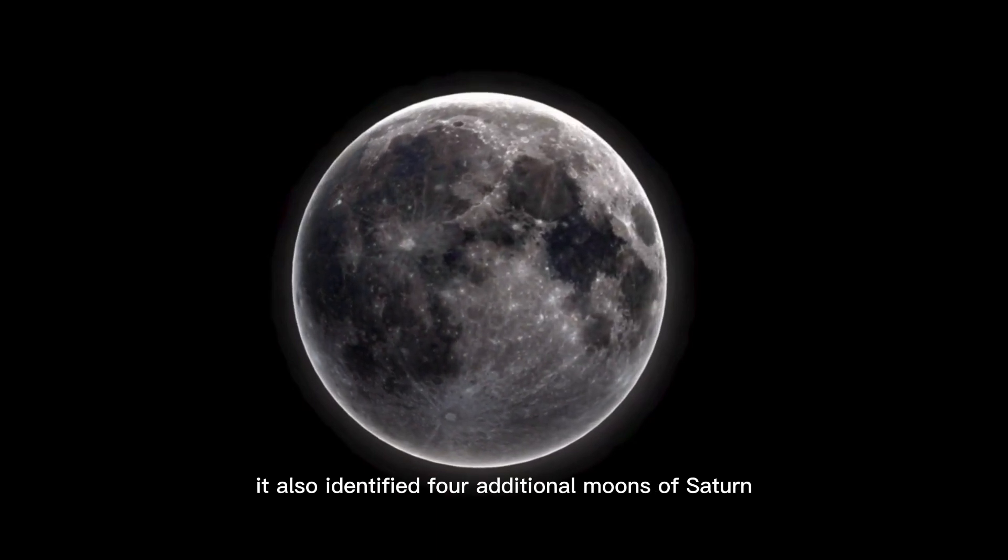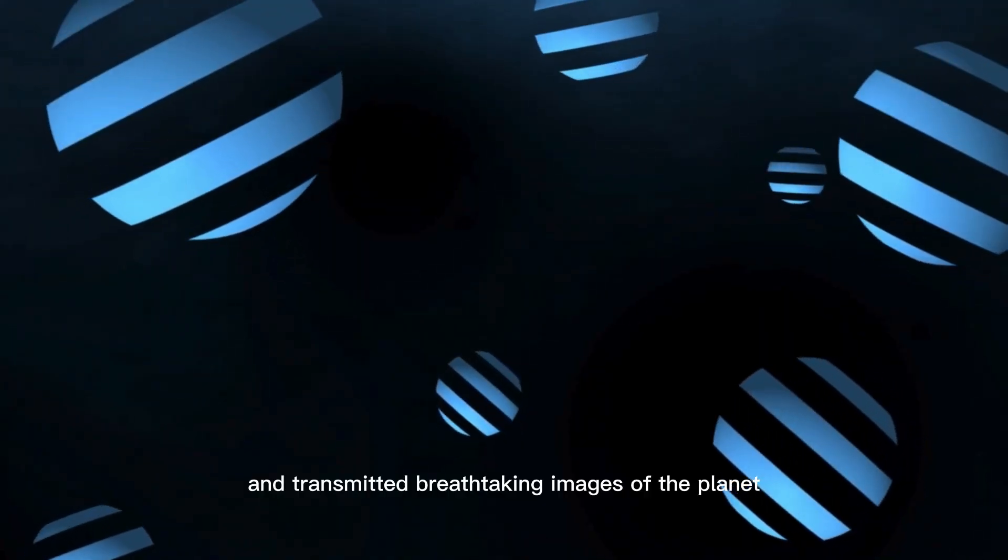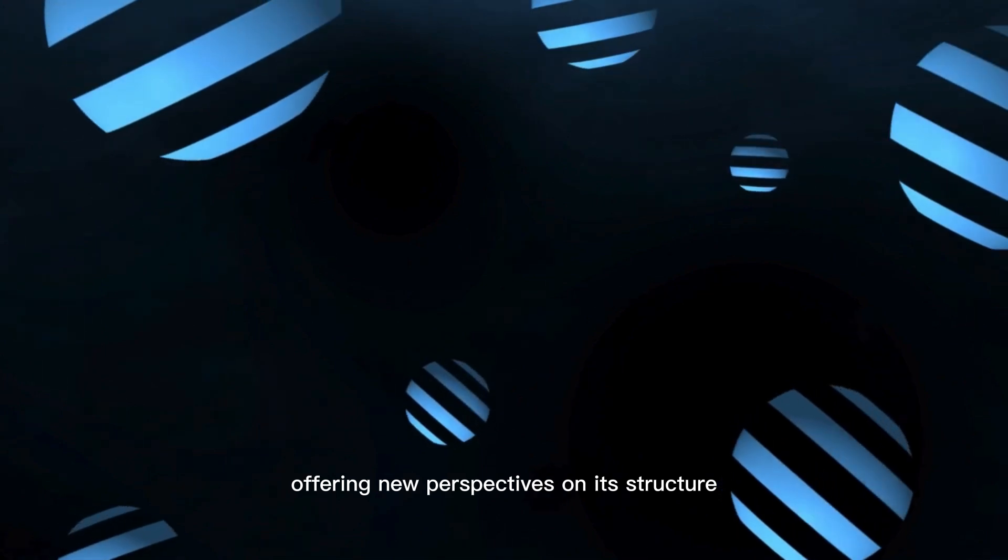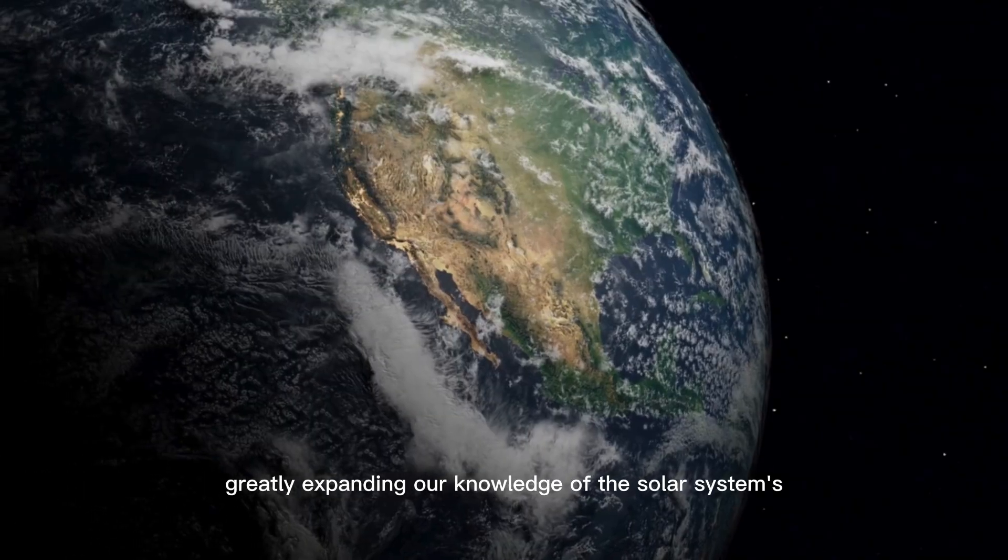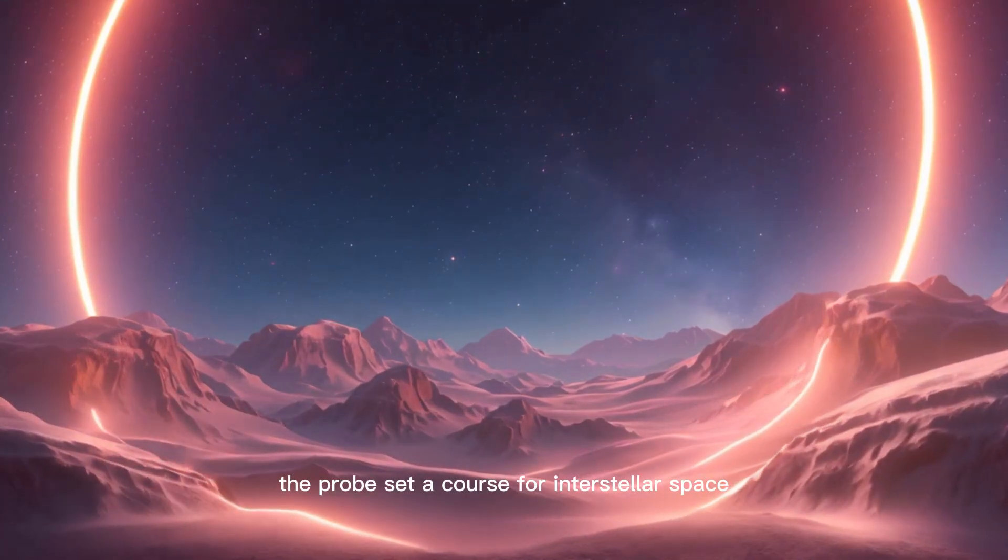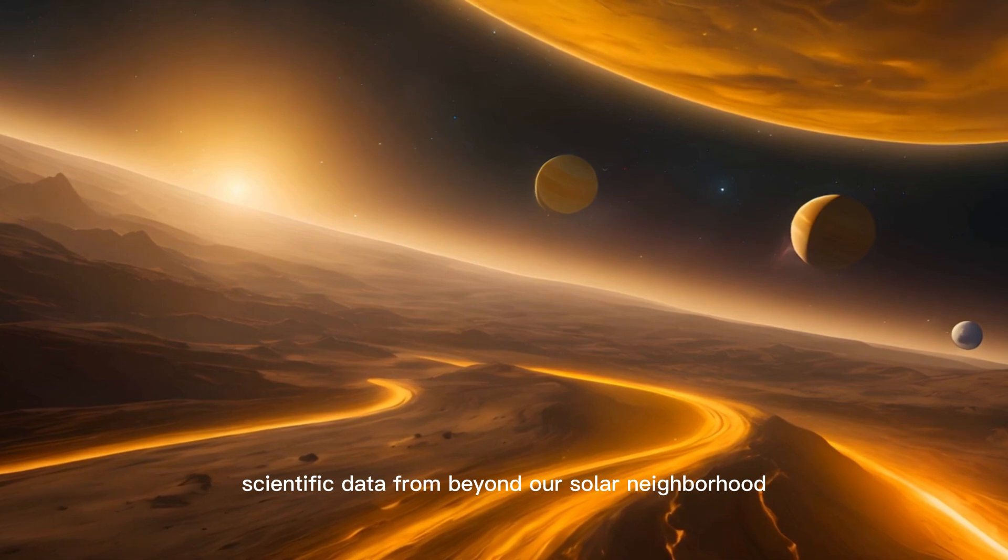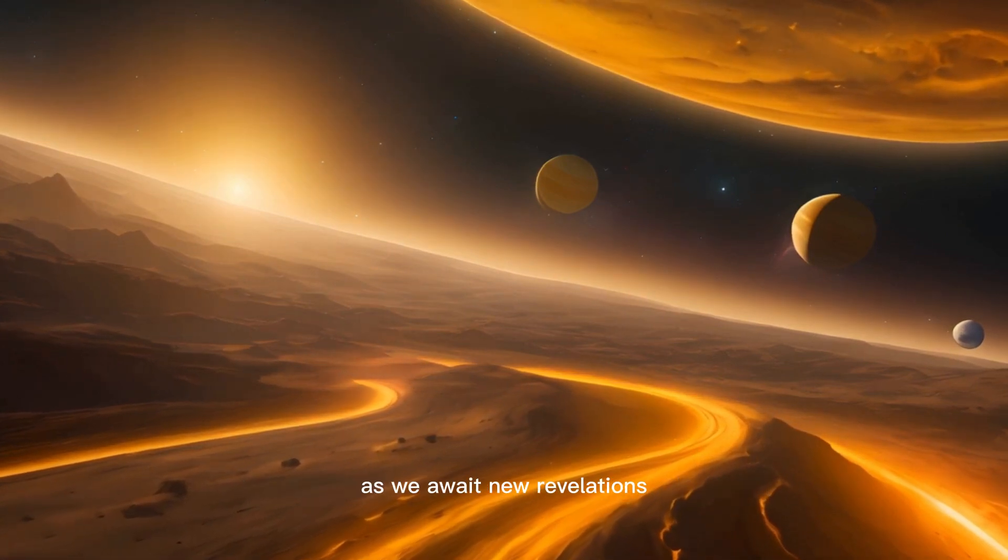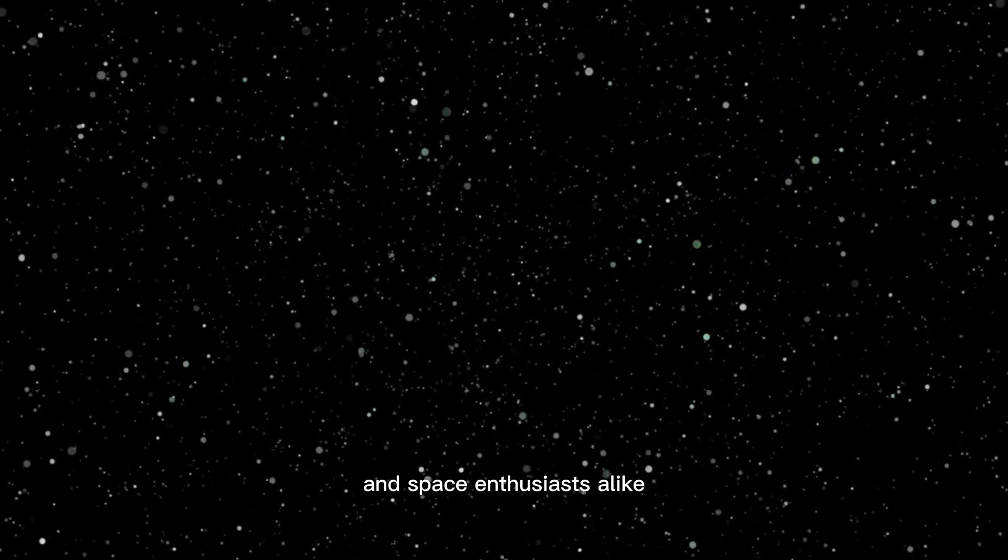It also identified four additional moons of Saturn: Mimas, Enceladus, Tethys, and Rhea, and transmitted breathtaking images of the planet and its rings. The flybys of Uranus and Neptune delivered essential data about their atmospheres and moons, greatly expanding our knowledge of the solar system's distant realms. Once their planetary missions were complete, the probes set a course for interstellar space, where they continue to transmit critical scientific data.